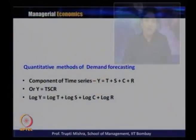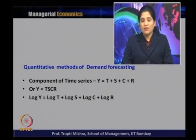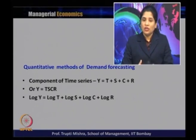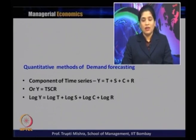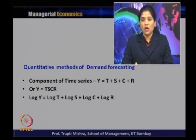If we put these components in equation form, then y (the time series) equals t plus s plus c plus r, where t is the secular trend, s is the seasonal trend, c is the cyclical trend, and r is the random event. This can be in additive form (y = t + s + c + r) or in multiplicative form (y = t × s × c × r). Taking the logarithmic transformation of the multiplicative form gives: log y = log t + log s + log c + log r.